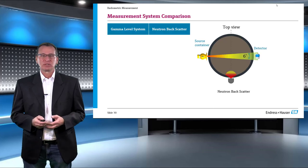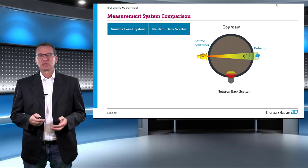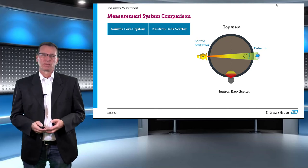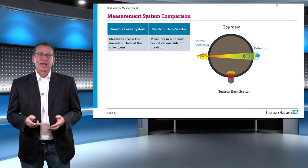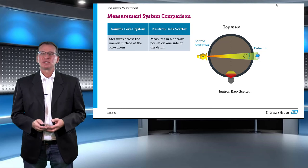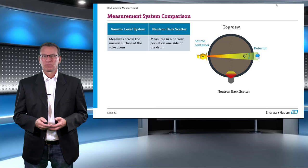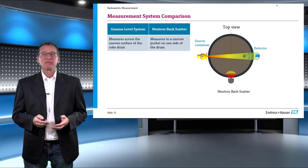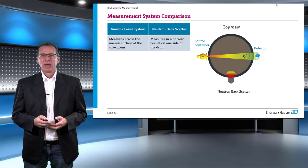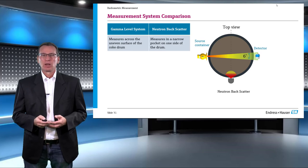Let's have a brief comparison in the gamma level system versus the neutron backscatterer. A gamma system typically consists of a radioactive source and a detector mounted on the opposite ends of the vessel. Since the level inside the coke drum is uneven in the filling stage, penetration of radiation across the vessel helps to map this unevenness. On the contrary, because a neutron backscatterer relies on the reflected neutrons, it penetrates the surface of the medium only marginally and hence measures in only small pockets.